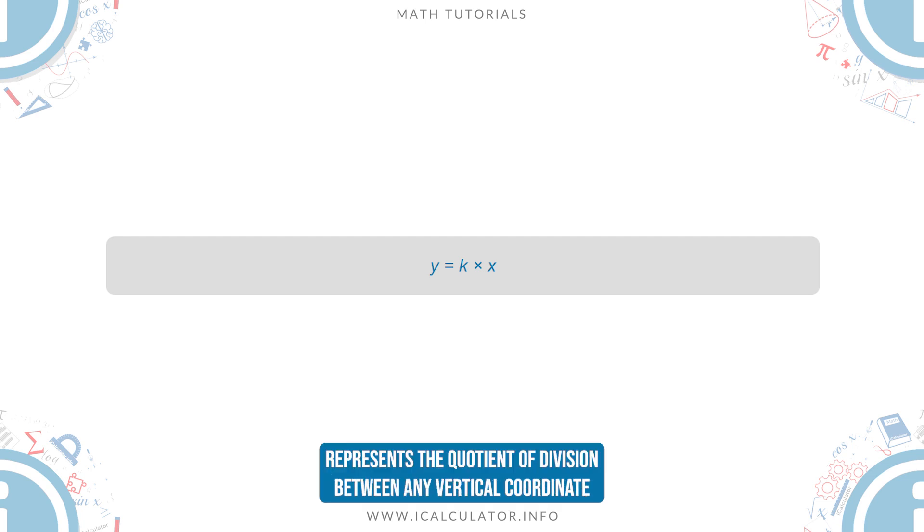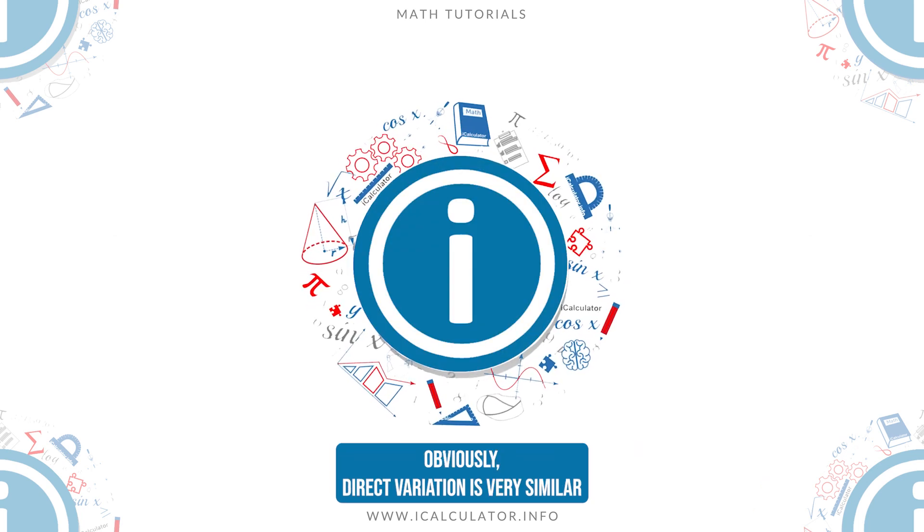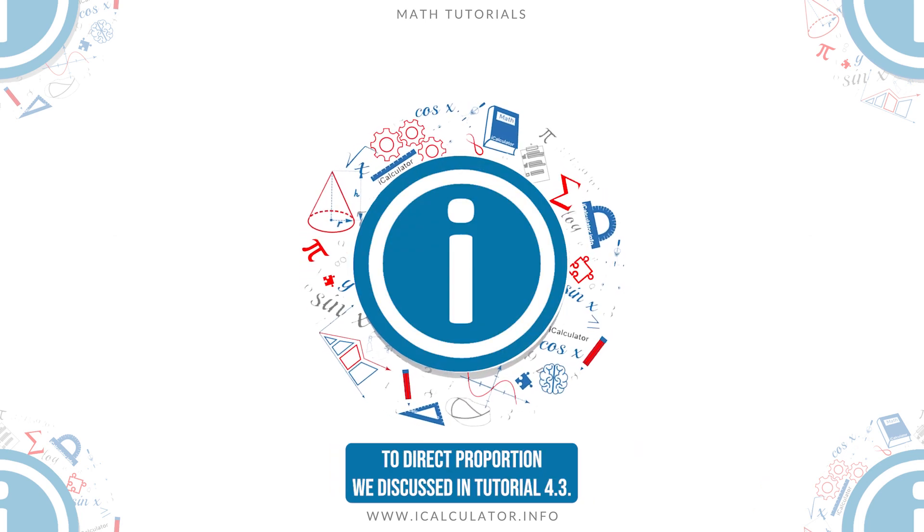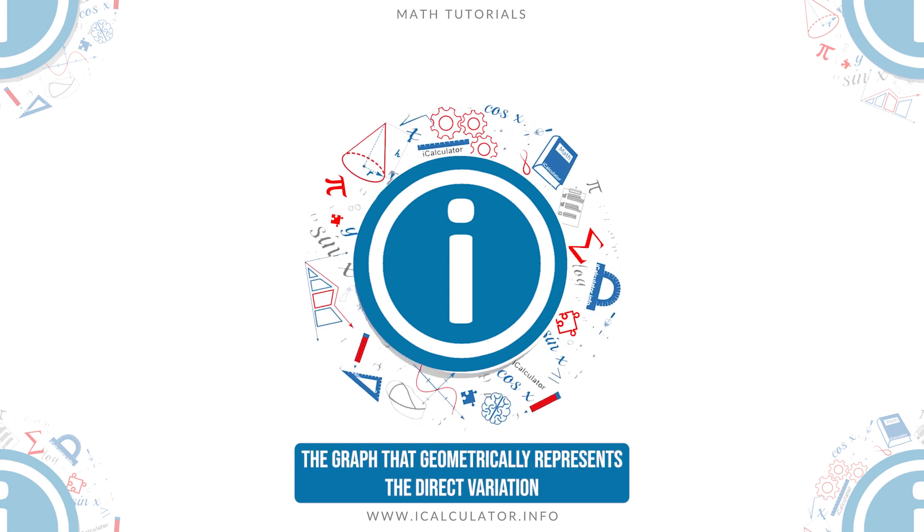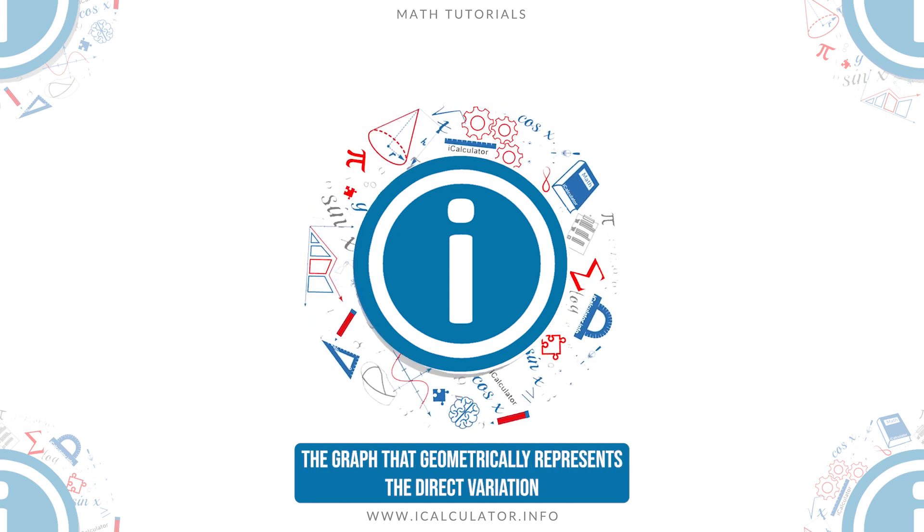Obviously, direct variation is very similar to direct proportion we discussed in tutorial 4.3. The graph that geometrically represents the direct variation is a straight line that passes through the origin.